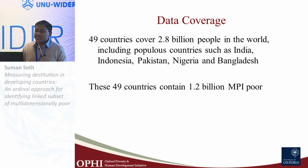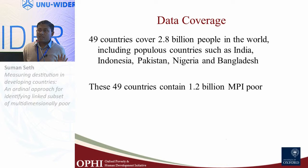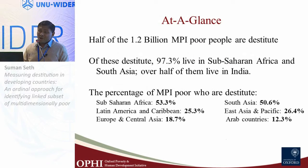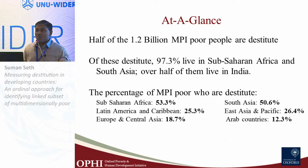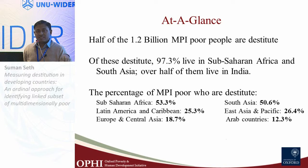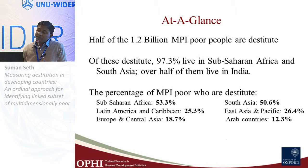The 49 countries include populous nations such as India, Indonesia, Pakistan, Nigeria, and Bangladesh, and together contain 1.2 billion MPI poor. We expected to find a small number of destitutes given the severe deprivation cutoffs, but we find that half of the 1.2 billion MPI poor are destitute. We selected the deprivation cutoffs independently of this result — the finding emerged from the methodology. Of those destitutes, 97.3% live in sub-Saharan Africa and South Asia, and over half live in India.